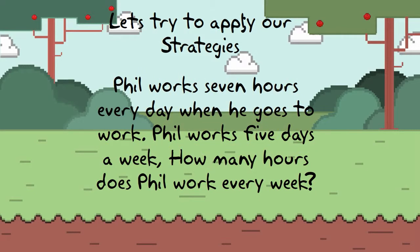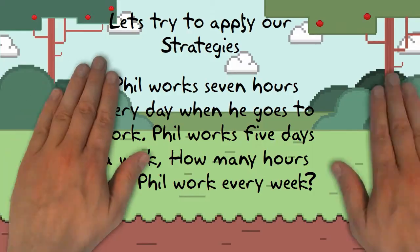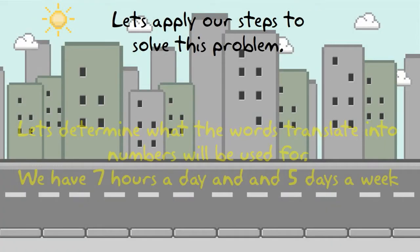Let's try to apply our strategies. Phil works seven hours every day when he goes to work. Phil works five days a week. How many hours does Phil work every week? Now let's apply our steps to solve this problem. Let's first determine what the words translate into — the numbers that will be used. We have seven hours a day and we have five days a week.